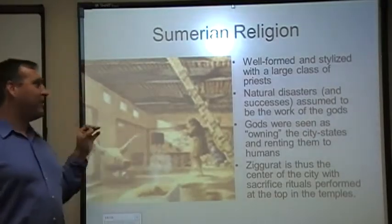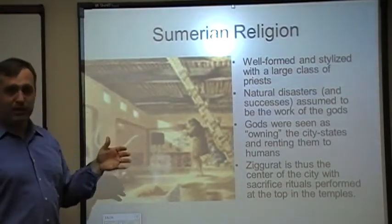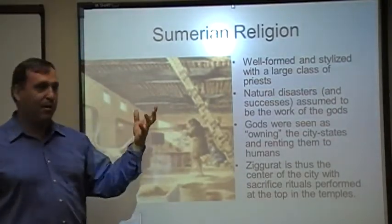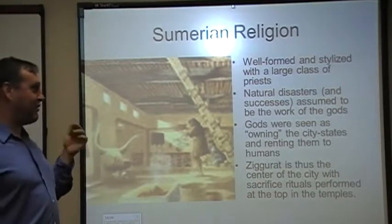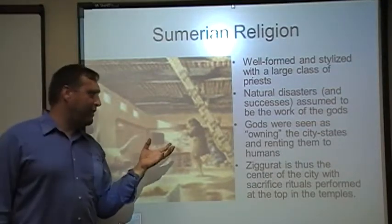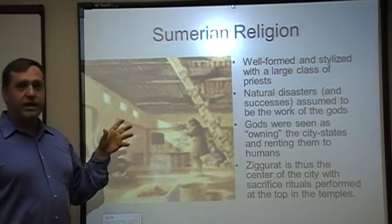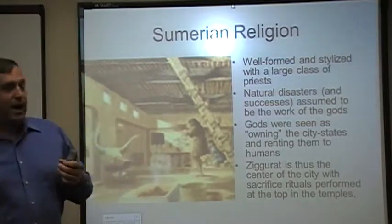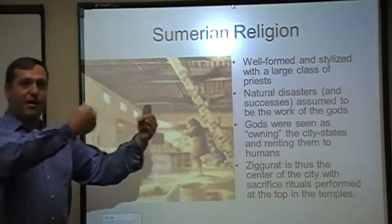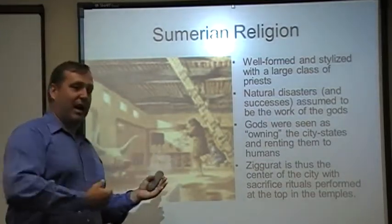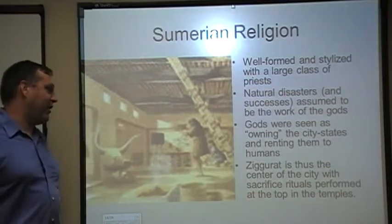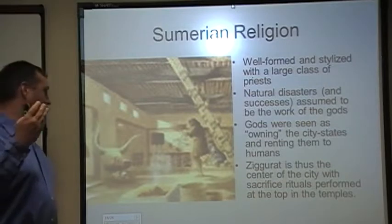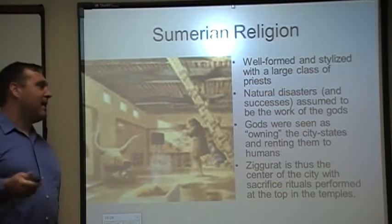The Sumerian religion, which I've mentioned in dribs and drabs, was actually pretty well formed — very highly stylized, with certain rituals, certain belief systems, and a very large class of professional priests. Natural disasters and bountiful natural successes such as bumper crops were assumed to be the work of the gods. The concept was that their various pagan gods were seen as the real owners of the city-state — they formed the earth and all this stuff, and basically the humans were renting it from them. As long as they did what was right in the eyes of the gods — performing certain rites and rituals, doing certain work, and taking care of the priestly class — they were paying their rent. This is why the Ziggurat Temple is the center of the city with sacrifice rituals performed on the top, including bull worship.